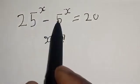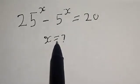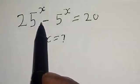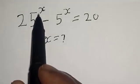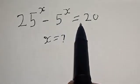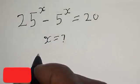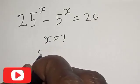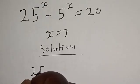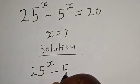25 raised to power x minus 5 raised to power x is equal to 20. What is the value of x? Welcome to my class. In this class we want to find the value of x from this equation. Please don't forget to like, comment, share and subscribe. Thank you.